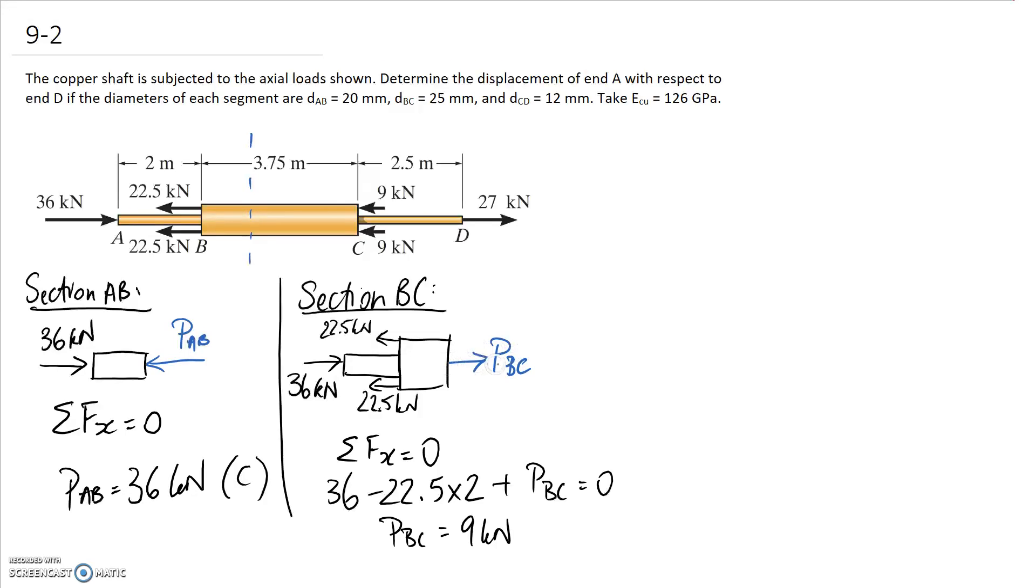And looking at this internal force it's pulling away from our member which means it's going to be in tension through this segment. Alright so that concludes that one. So we only have one left and that is to look at what happens through section CD.